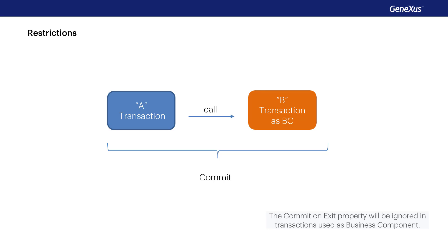This means that although the transaction has the Commit on Exit property set to yes, if the transaction is used as a business component the commit will not be executed automatically, and it will be necessary to declare the commit command explicitly. The reason for this behavior is to allow specifying logical units of work between multiple transactions, including the commit command where necessary.